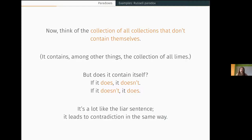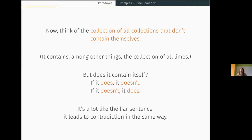Now think of the collection of all collections that don't contain themselves. If it does contain itself, then since it only contains collections that don't contain themselves, it doesn't. On the other hand, if it doesn't contain itself, then it's a collection that doesn't contain itself — which is exactly what it takes to get into this collection, so it does. This leads to contradiction in the same way as the liar sentence. These three examples all have a similar vibe — and I want to call attention to both the similarities and important differences.